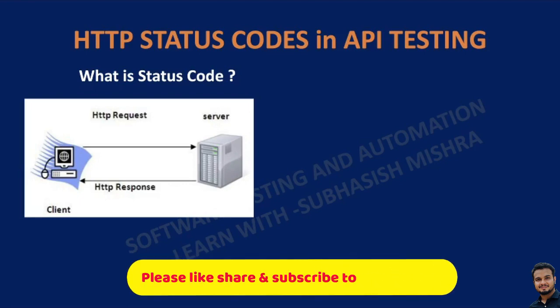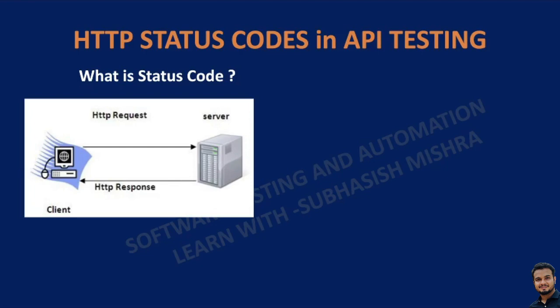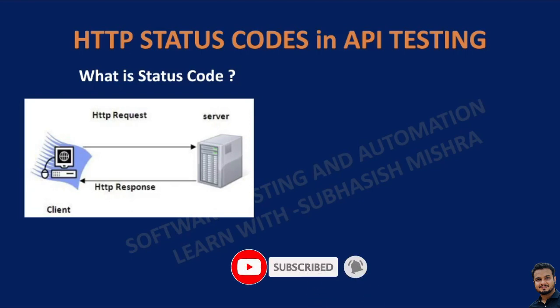What happens in between? Your browser sends an HTTP request to the website server, and then the server responds to the browser's request with an HTTP response which contains a 3-digit code — that is known as your HTTP status code. These status codes are like messages from the server which let you know how things went when it receives the request to view a certain page. This kind of message is returned every time your browser interacts with a server, even if you don't see them.